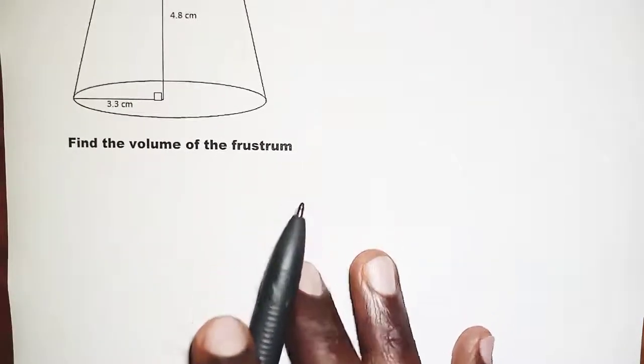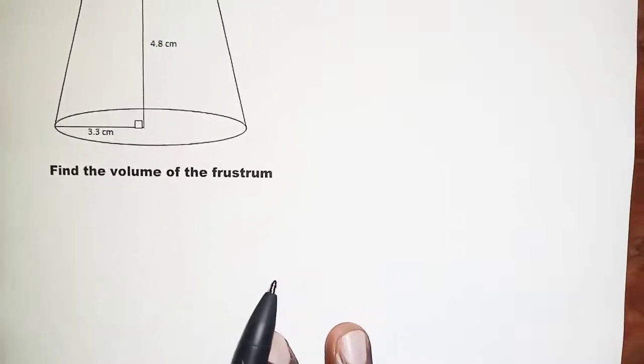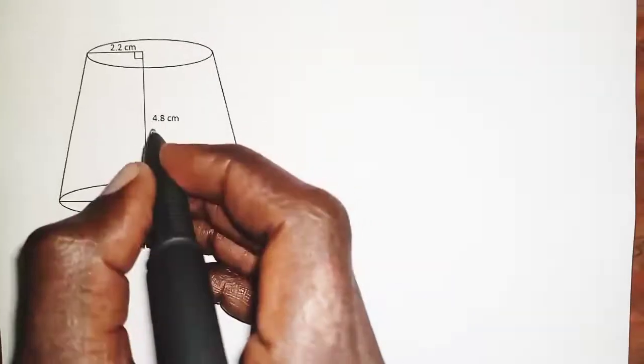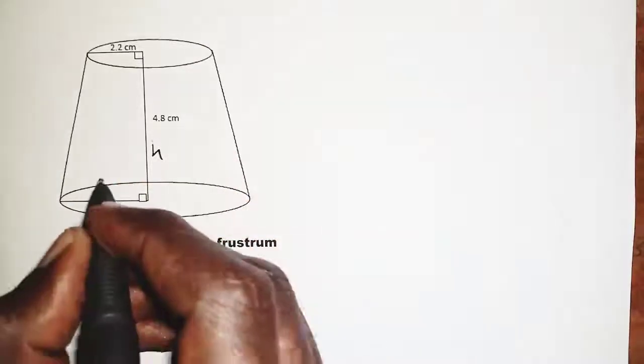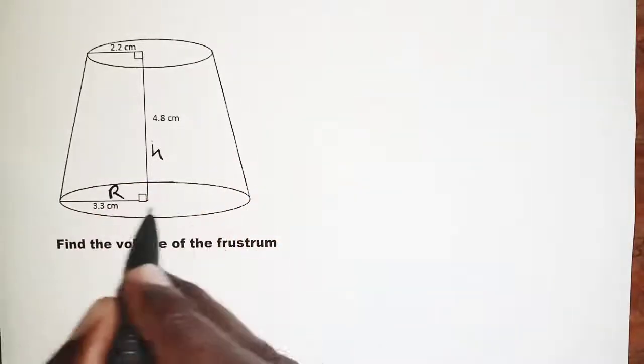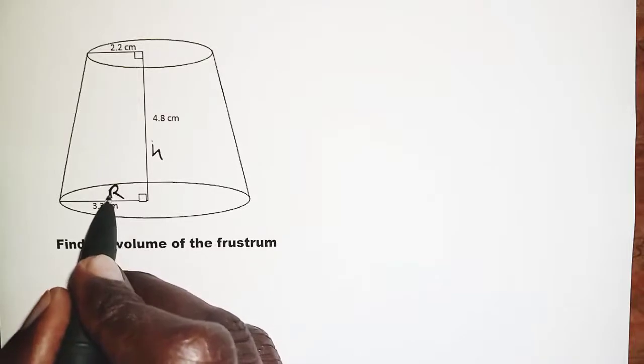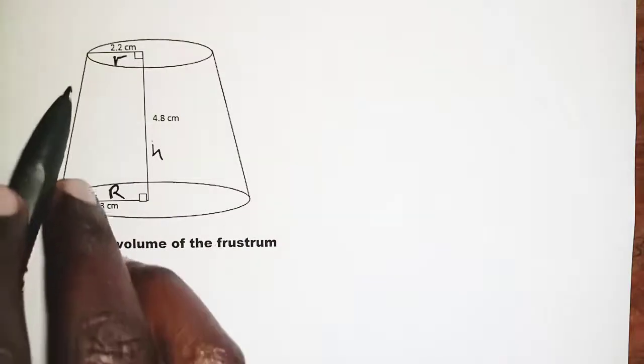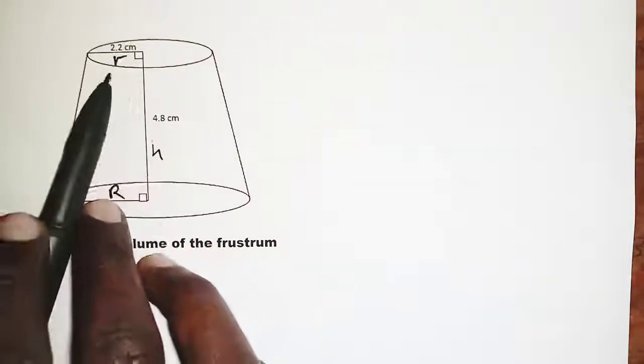In order to find the volume of a frustum, we're going to use a formula. We're going to let this be the height, the radius of the base which is wider. We represent the radius by R, and the radius on the smaller top is r.